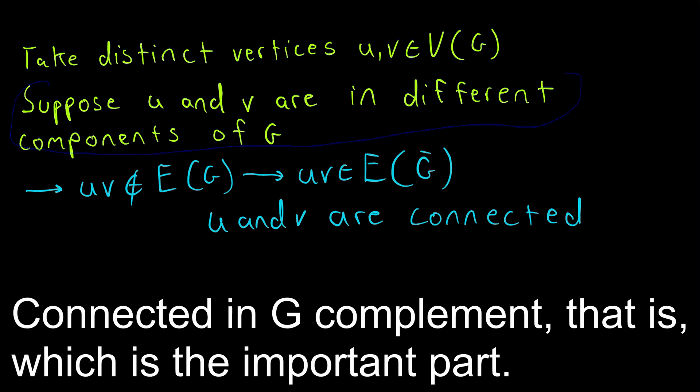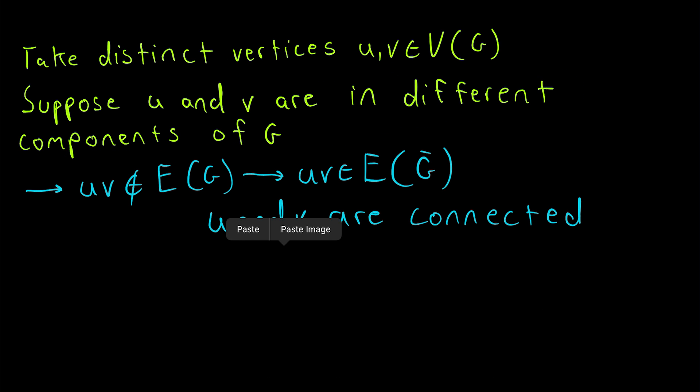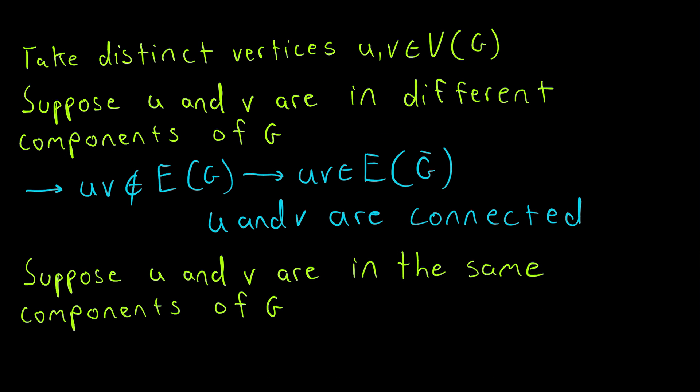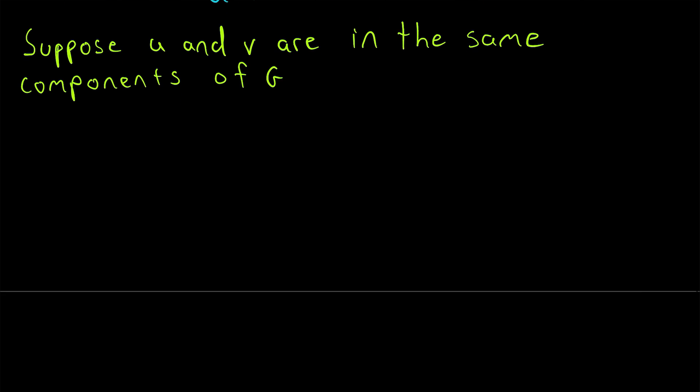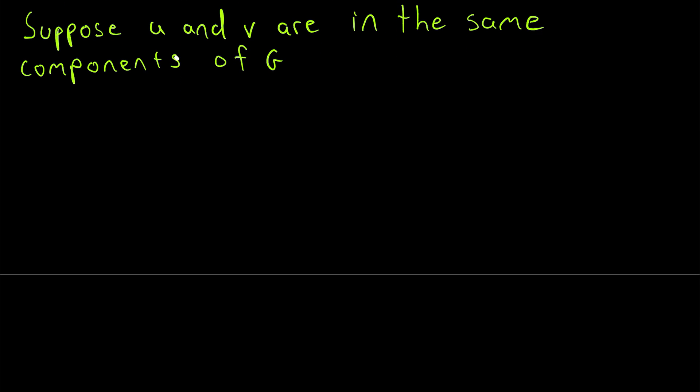Now the other possibility of course is that U and V are in the same component. So that's what we suppose next. Suppose U and V are in the same component of G. Now this is just a little bit trickier but not by much.